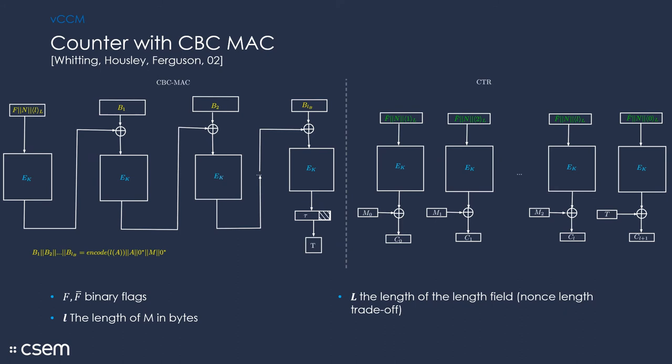All right, let's recap how CCM works. CCM has two principal components. The first is the CBC-MAC, which computes the authentication tag. We see that the CBC-MAC processes these blocks B1, B2 to BLE, and these are obtained by chopping down an encoding of associated data, length of associated data, and message.